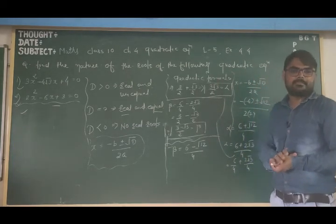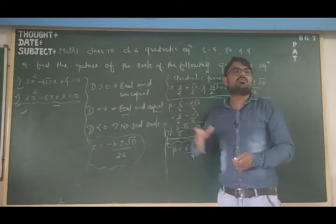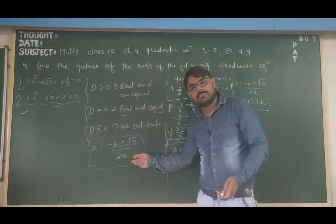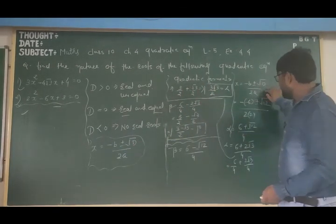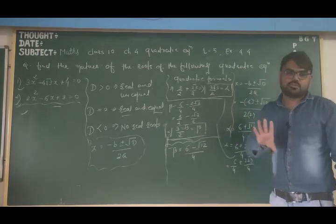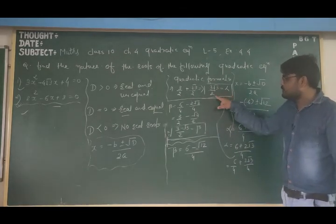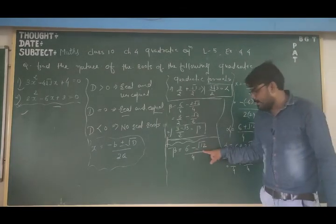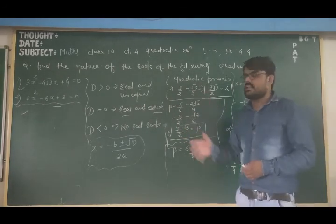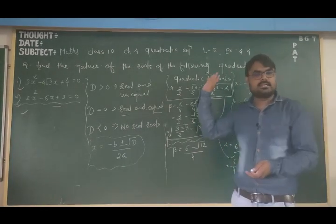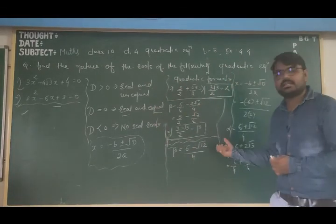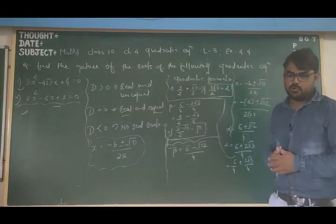So D was greater than zero, which means the quadratic equation has real and unequal roots. We discussed all three conditions: when D is less than zero, no real roots — no further calculation needed. When D equals zero, find two equal roots using the formula. When D is greater than zero, use the formula with plus and minus to get two different roots. I hope you got it. Thank you.